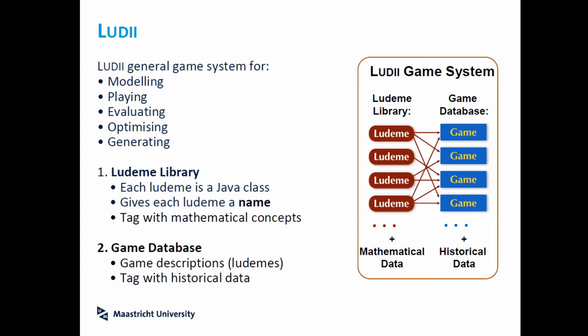The system is called Ludi. Ludi is a general game system. With it, it's possible to model, play, evaluate, optimize, or generate any games. The system is mainly organized in two parts. The first is a ludeme library, where each ludeme is associated with a mathematical ID. A ludeme is just a class in Java. If you combine many ludemes, you can create a ludeme tree, and a ludeme tree is a game. We can store that game in a database associated with historical data. With just this organization, we have almost all the system, and it's possible to do anything you want with a game.